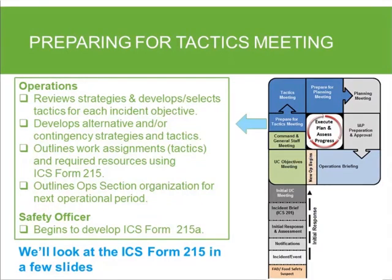Now we've moved on from the command and general staff meeting to preparing for the tactics meeting. When setting the schedule, we want about one to two hours to allow the ops chief to get their objectives from the command and general staff meeting and work on their operational plan. This time period should probably be two hours or even more. The more time the operations section chief has to develop their plan the better — they can also be checking out in the field with their personnel to see what's being accomplished, so they know what's still on the agenda for tomorrow.